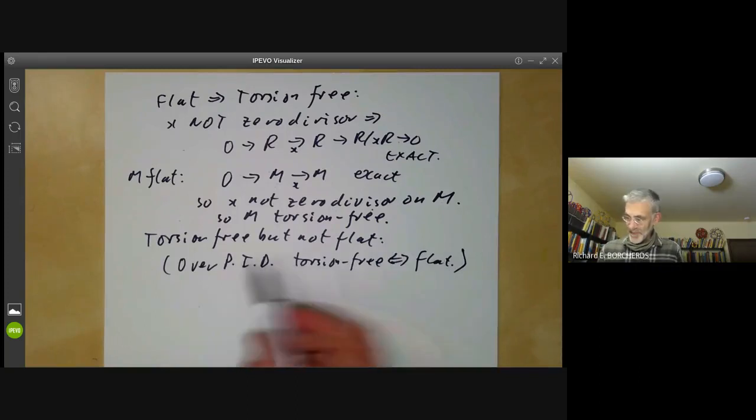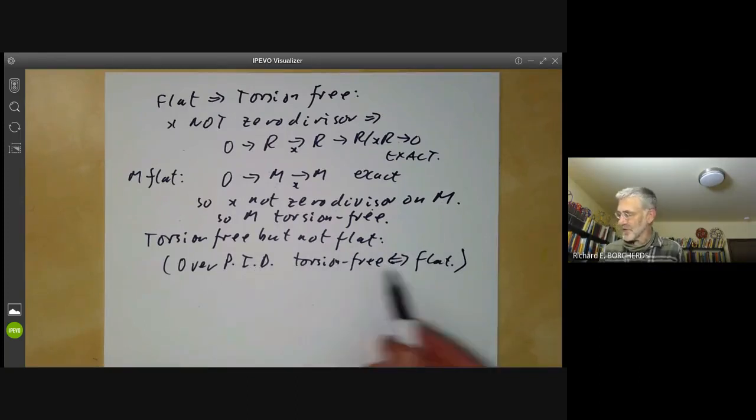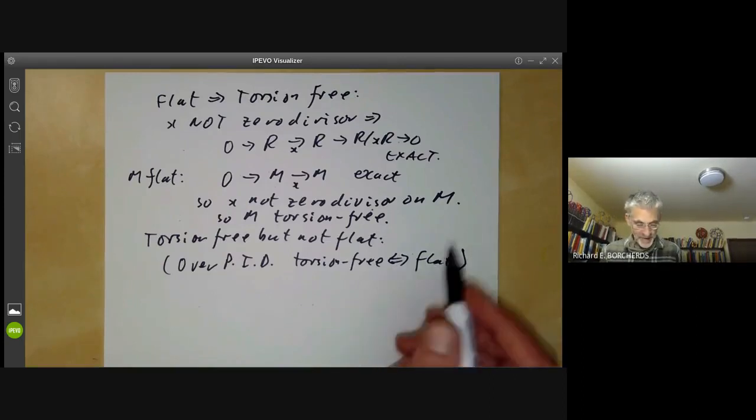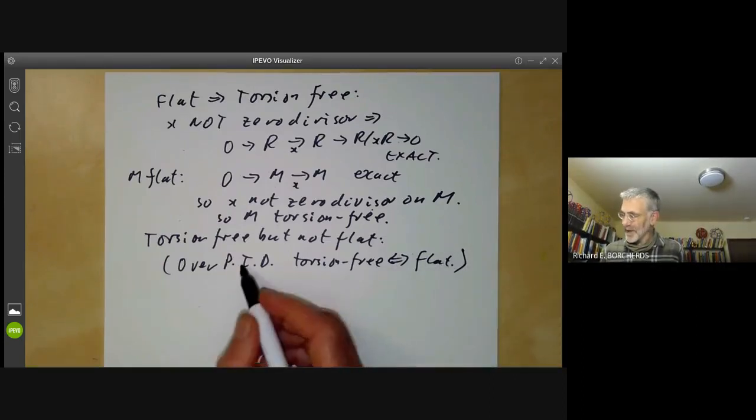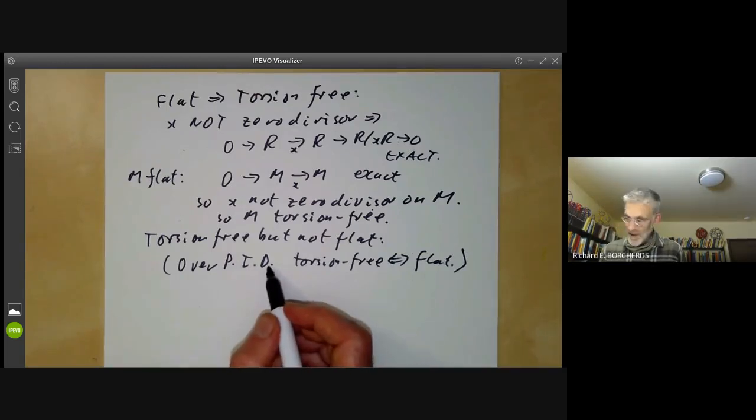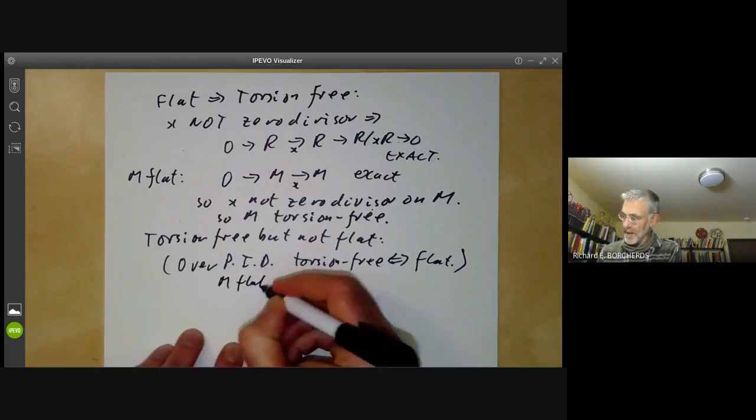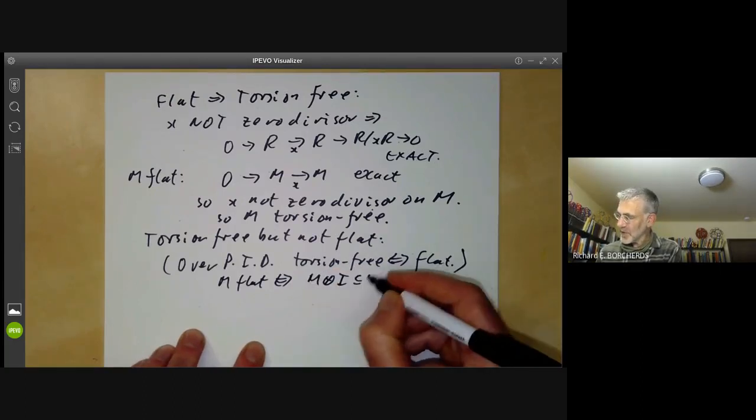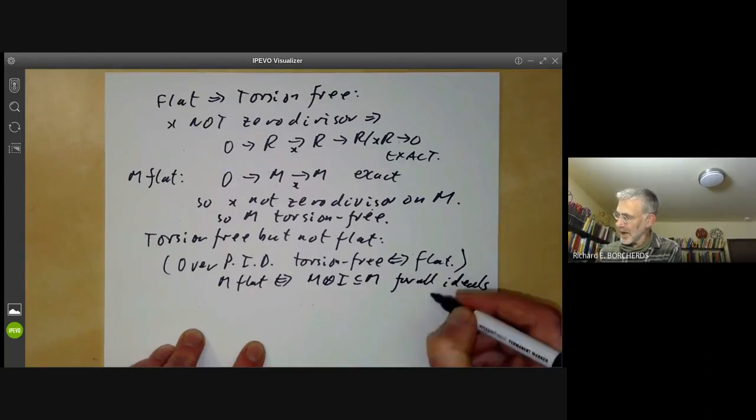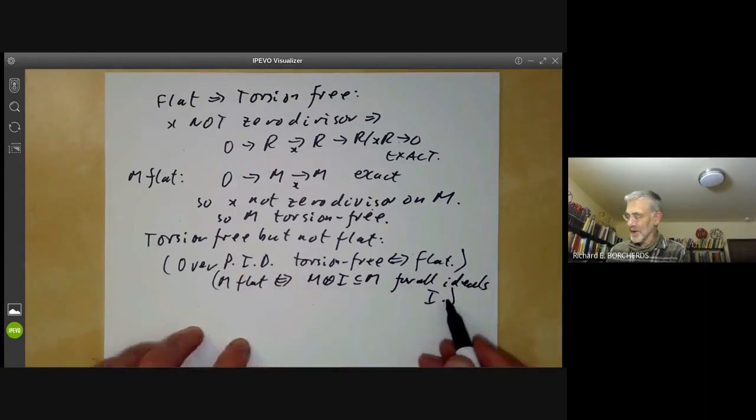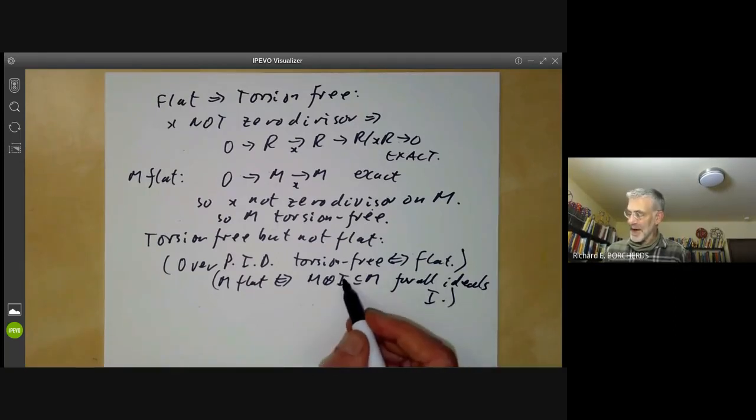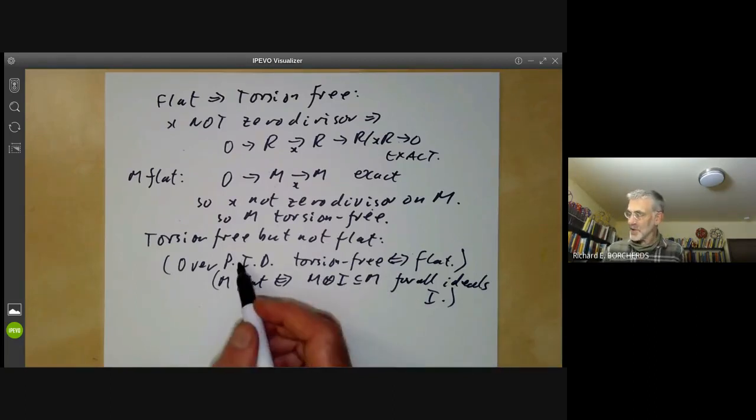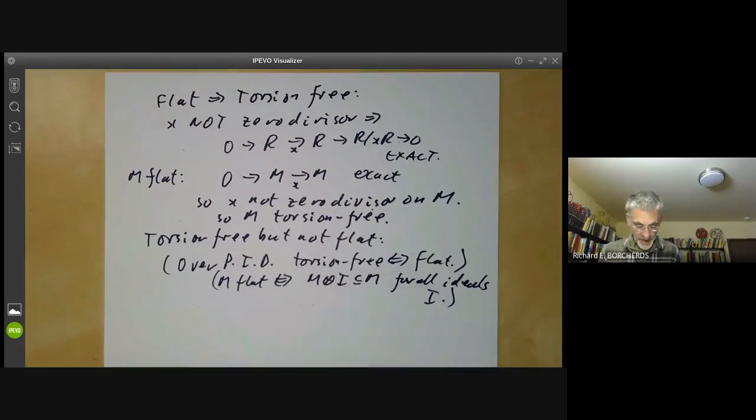You quite often use them over principal ideal domains. And there they have the advantage that torsion-free is a little bit easier to define than flatness. But you may as well just forget about torsion-freeness and use flatness, because flatness works nicely over other rings. The fact that over principal ideal domains torsion-free modules are flat follows from the fact that M is flat if and only if M tensored with I is a submodule of M for all ideals I. And if it's a principal ideal domain, then any ideal is principal, so torsion-freeness implies this property. This is also true for Dedekind domains, torsion-free also implies flatness.